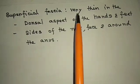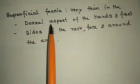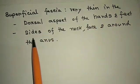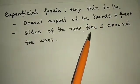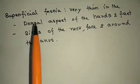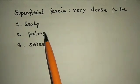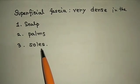The thickness of the superficial fascia varies according to different parts of the body. It is very thin in the dorsal aspect of the hands and feet, sides of the neck, face, and around the anus, but is dense in the scalp, palm, and sole.